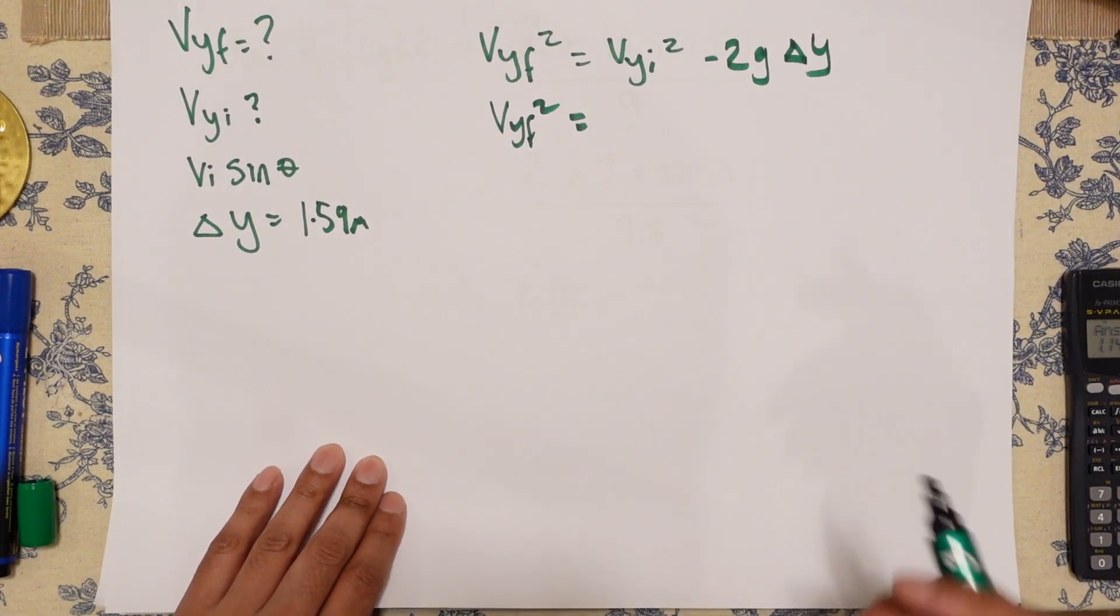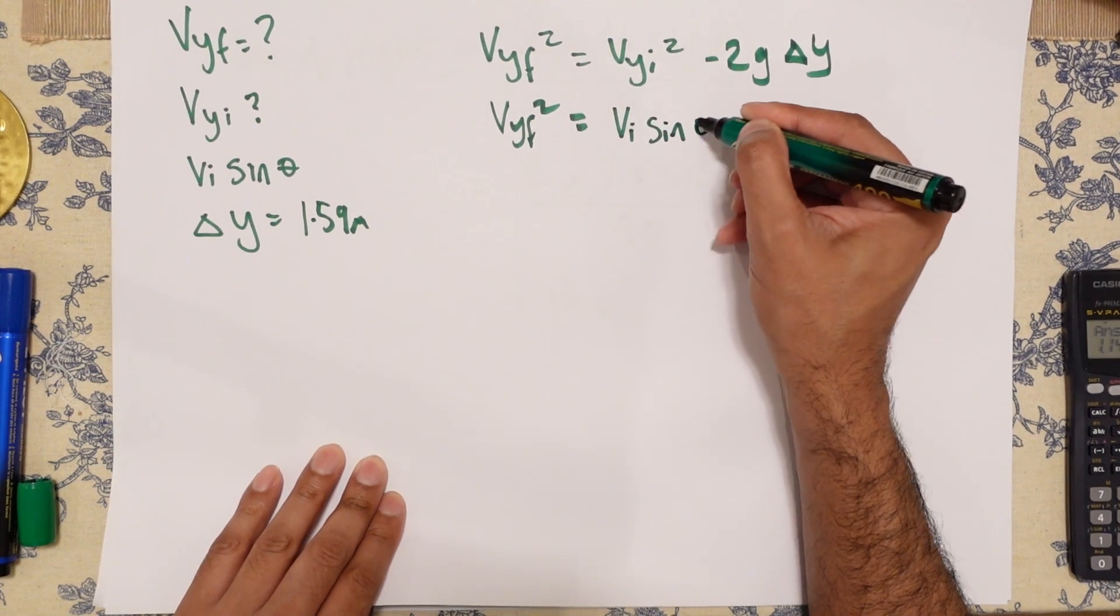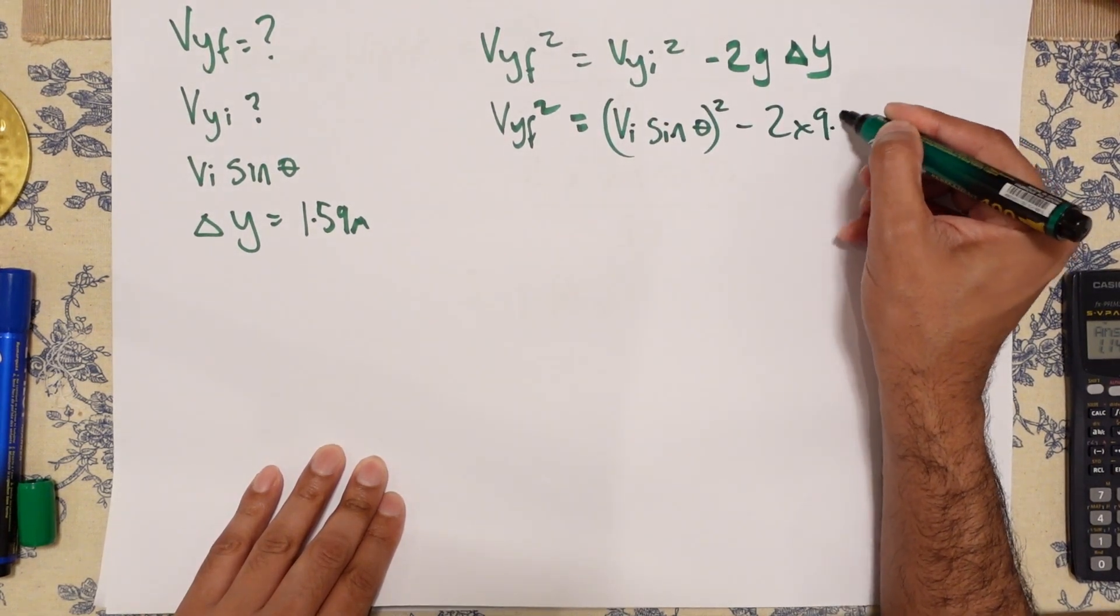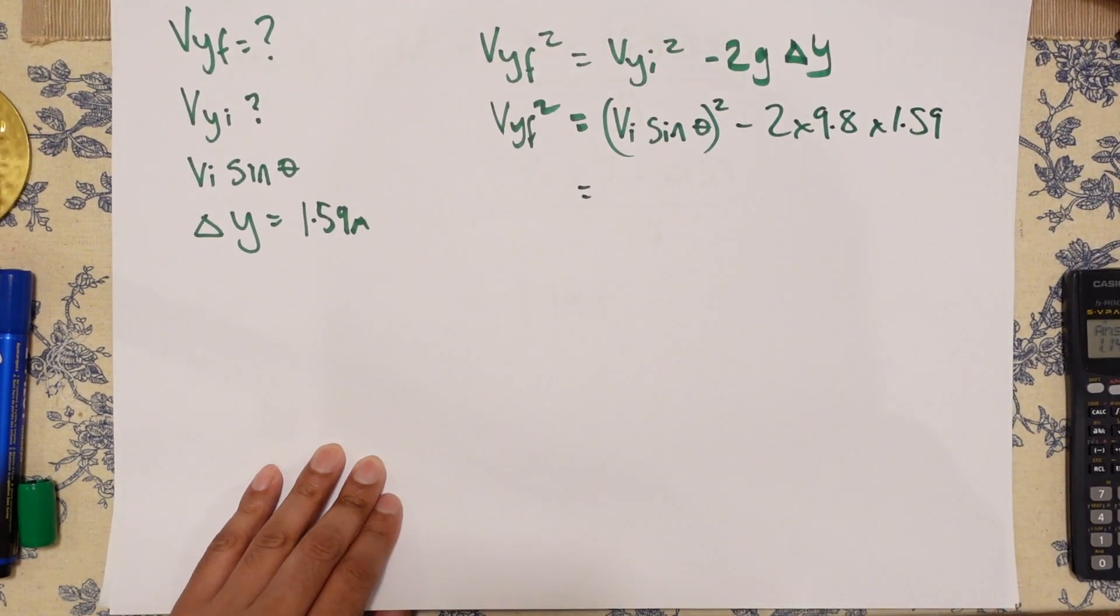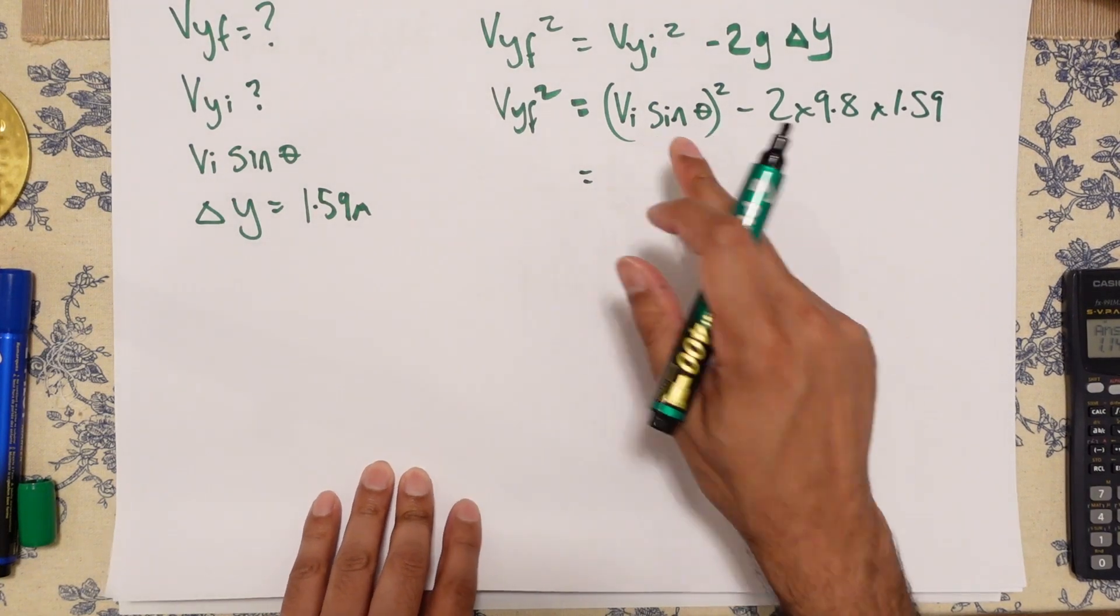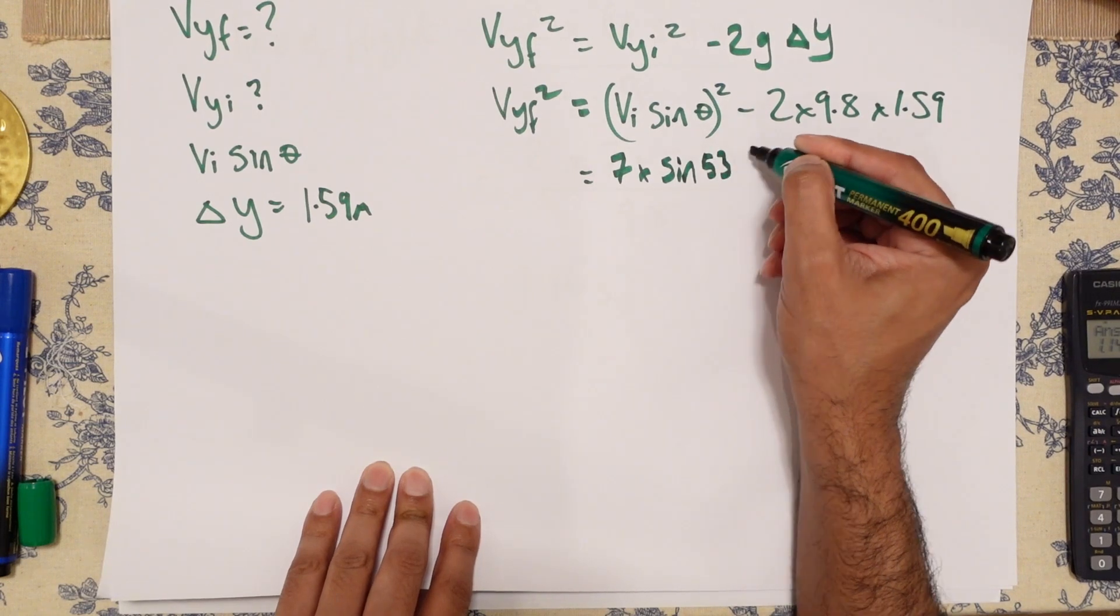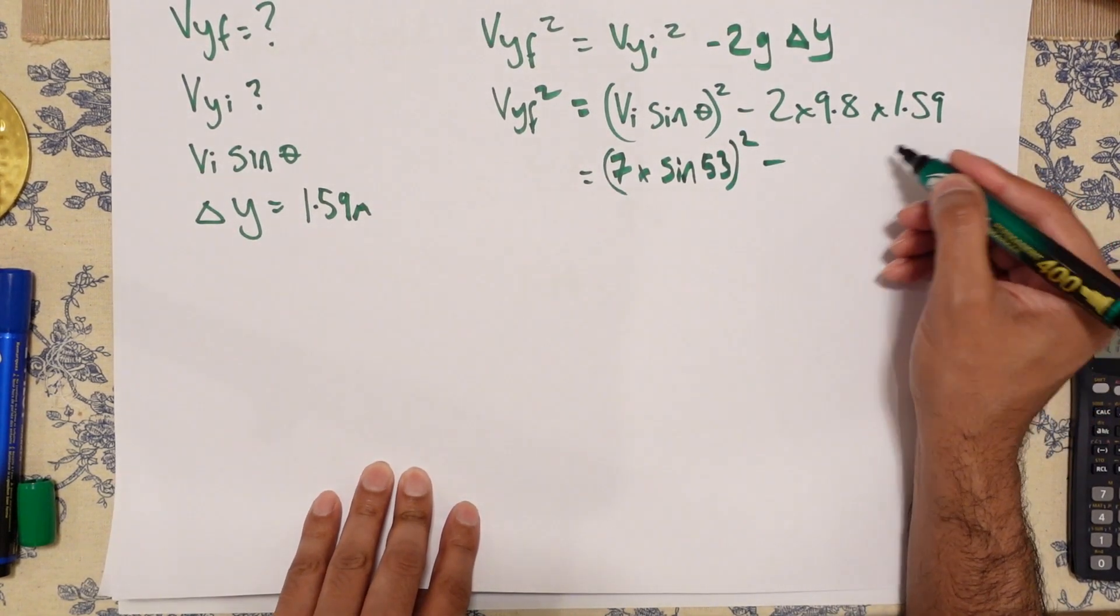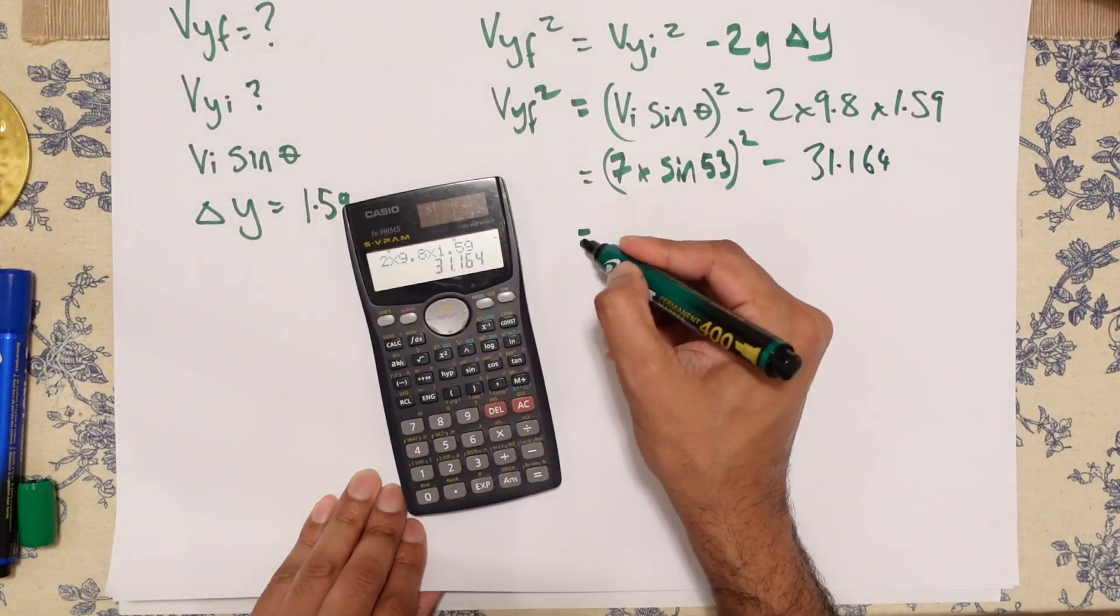So VYI squared is VI sine theta squared minus 2 times 9.8 times 1.59. Going to be a fairly small number. So VI sine theta, so VI sine theta was 7 times sine 53 squared minus all of that, 31.164. Let's work this out.